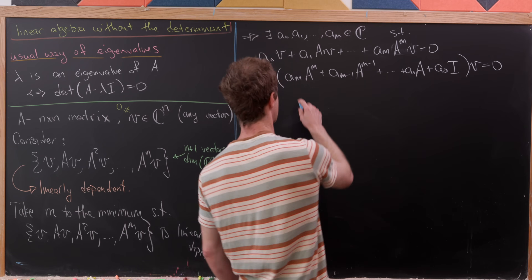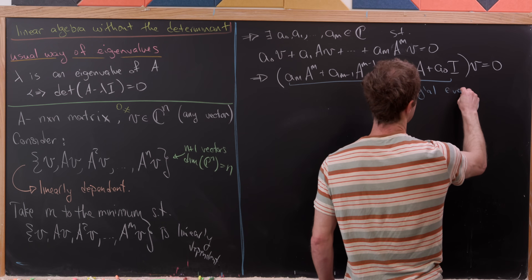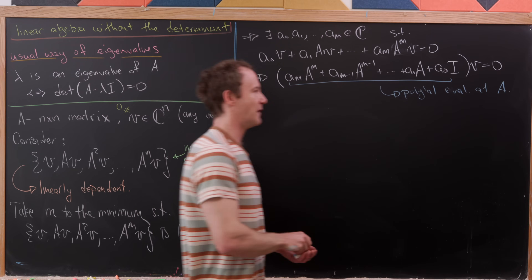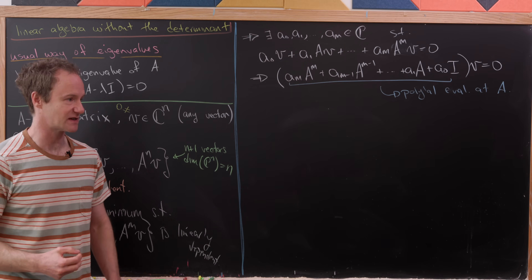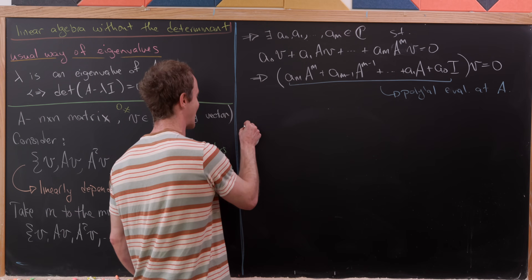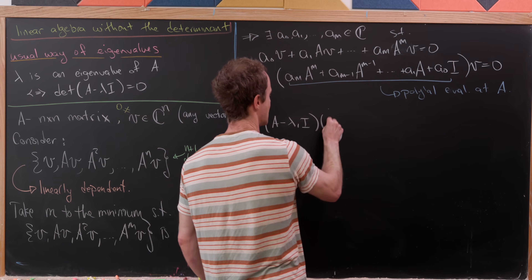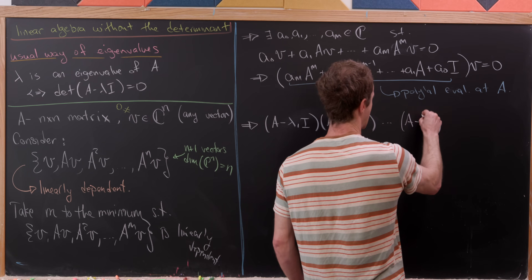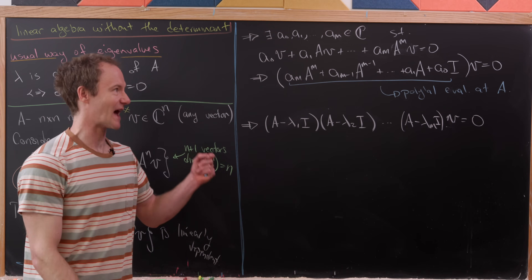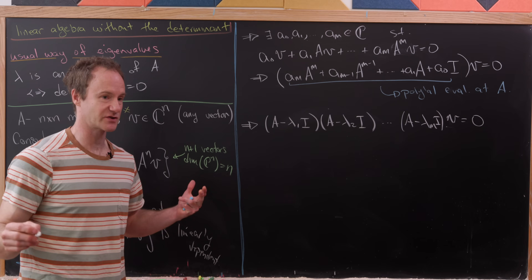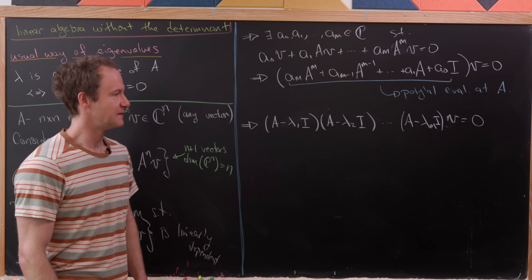What we have here is really just a polynomial evaluated at our matrix A. Since we're working over the complex numbers, we can use the fundamental theorem of algebra, which says any polynomial over ℂ factors into linear terms. So we factor that into: (A − λ₁I)(A − λ₂I)···(A − λ_M I) · V = 0. When we factor with this matrix, anywhere we'd normally have just a number, we put the identity matrix.